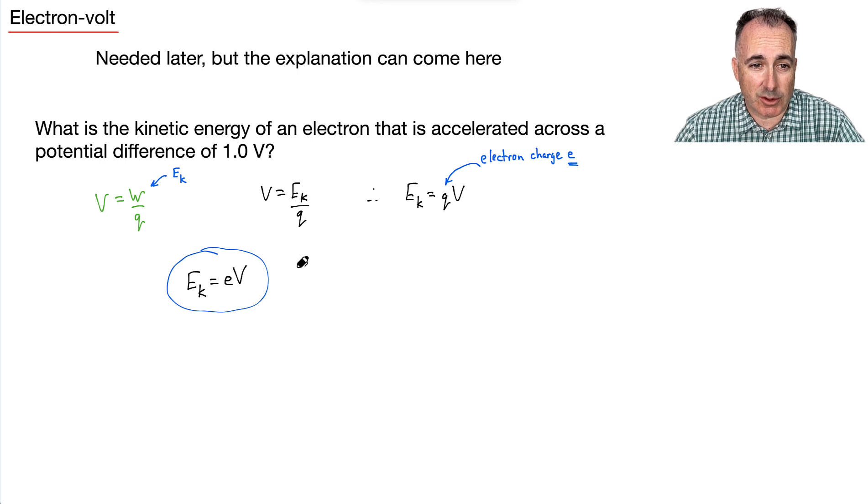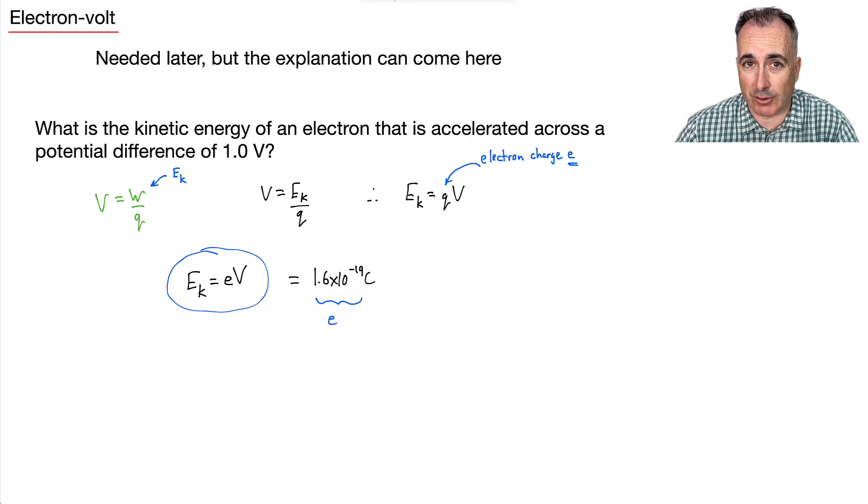We can look this up. We can look up the value for e. It's on your data booklet and it's 1.6 times 10 to the minus 19 Coulombs. That is the charge of one electron. And it's actually the elementary charge. So it turns out all charges in the universe seem to be some multiple of this. We call that quantum mechanics because everything is quantized.